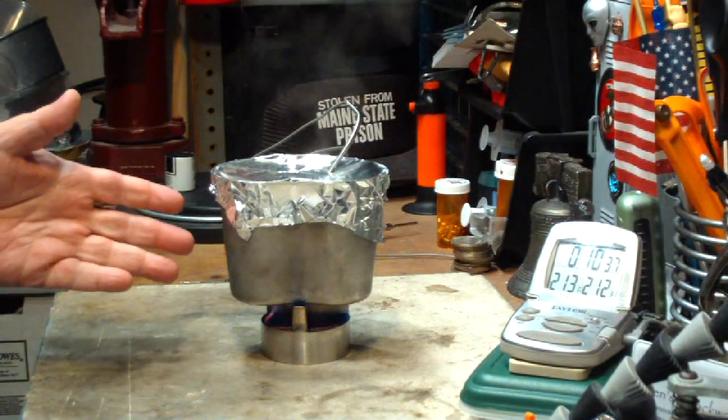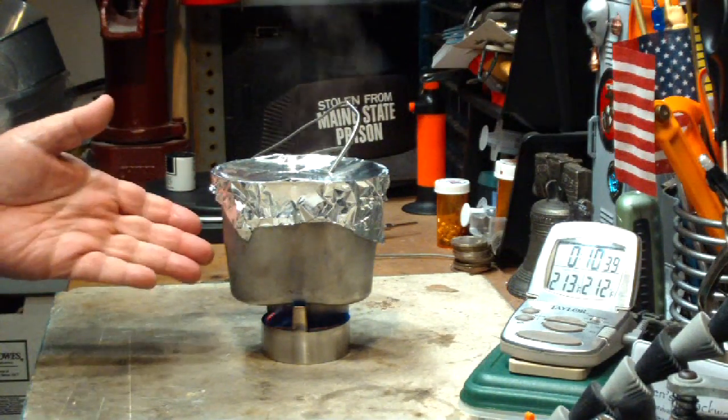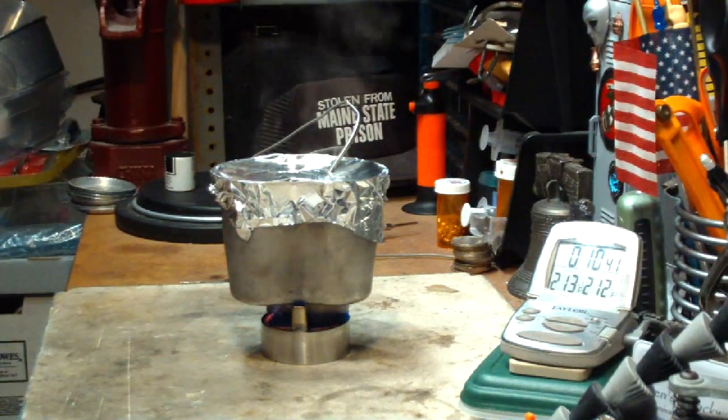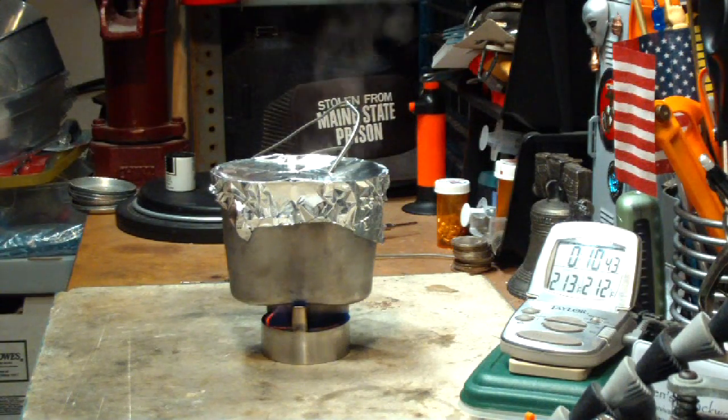But anyway, I hope that helps the people that asked. The canteen cup does indeed seem to work on the Flat Cat Gears Link Stove.